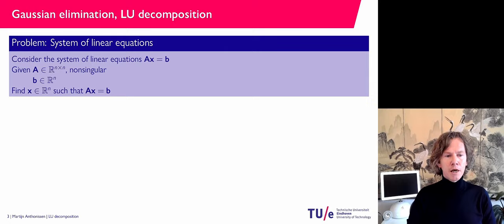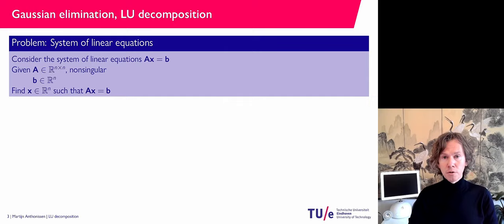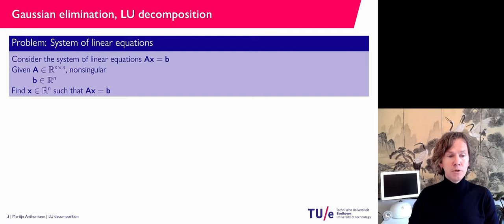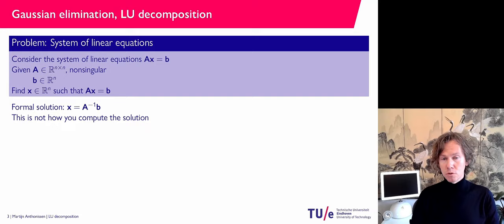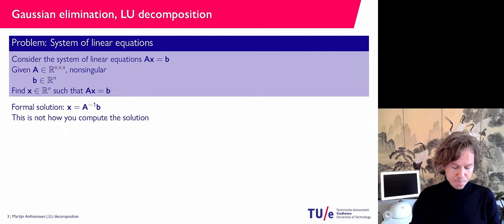The problem we're considering is: given a linear system Ax equals b, where A is a square matrix and we assume it is non-singular, we know there is a unique solution x. The formal solution is x equals A-inverse times b, so you could compute the inverse matrix and multiply by b, but I will indicate that this is much more expensive than using LU decomposition — so that is not how we compute the solution.